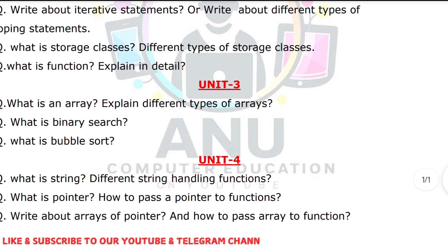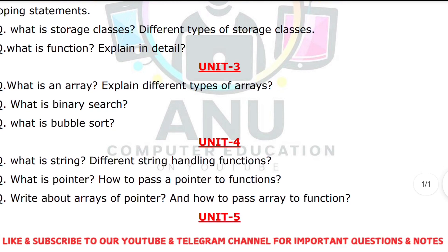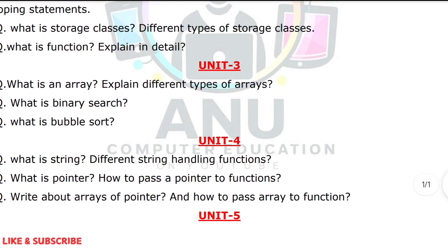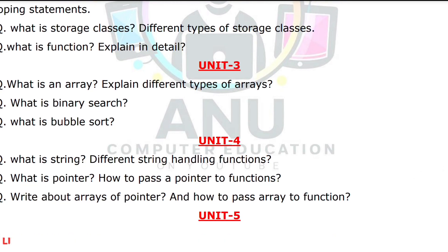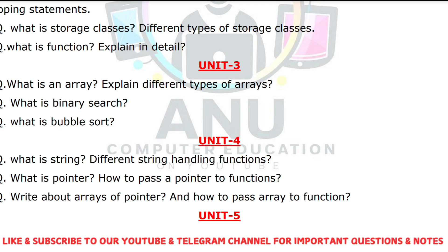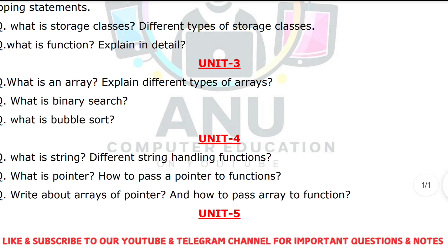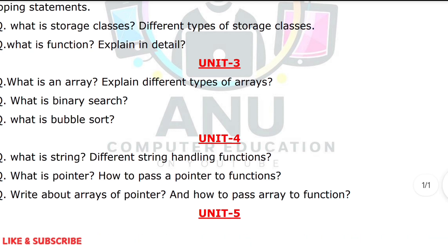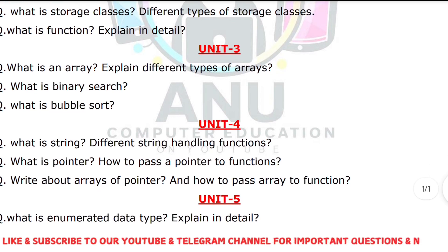What is the meaning of an enumerated type? An enumerated type is used to assign integer constants to its members. Enum is also called a user-defined data type. The syntax along with an example program must be explained.